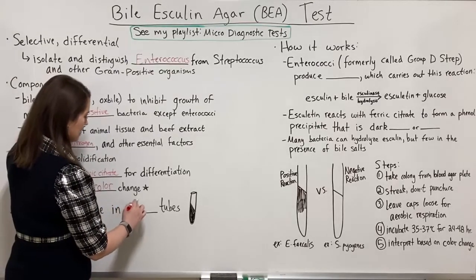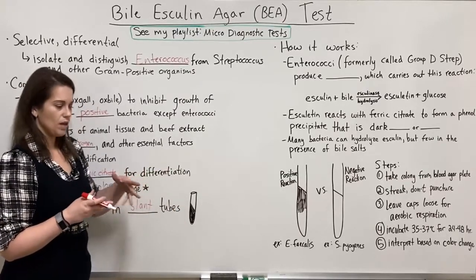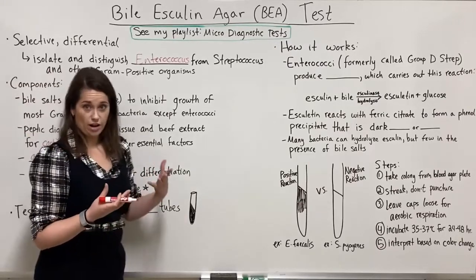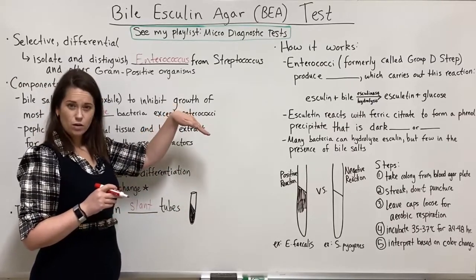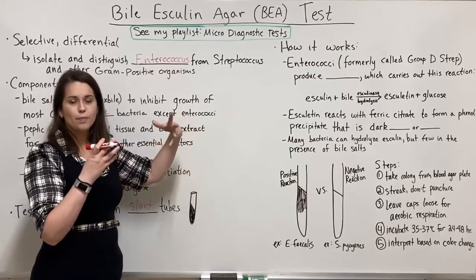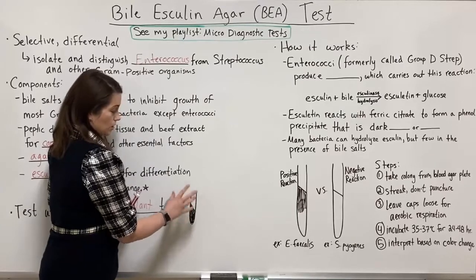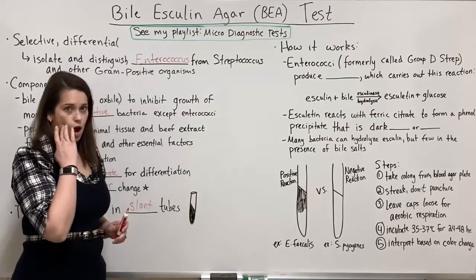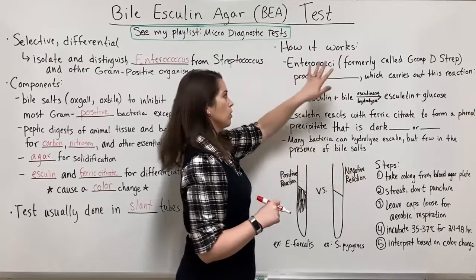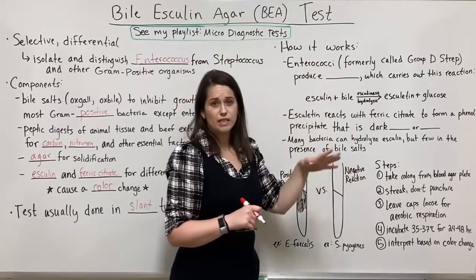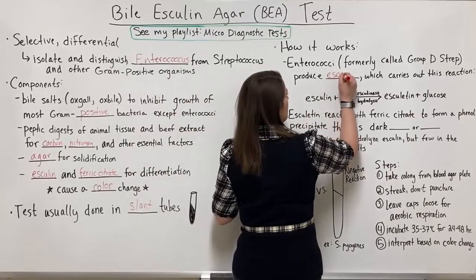This test is usually done in slant tubes. Molten agar is poured into tubes, which are then placed at about a 45-degree angle while they cool and solidify — so the solid agar surface is at a slant. Now, how does the test work? We're looking at Enterococcus — plural Enterococci. Formerly these were called group D strep, so you may still see that in older resources. Enterococci produce an enzyme called esculinase — remember, whenever a word ends in '-ase' it's an enzyme.